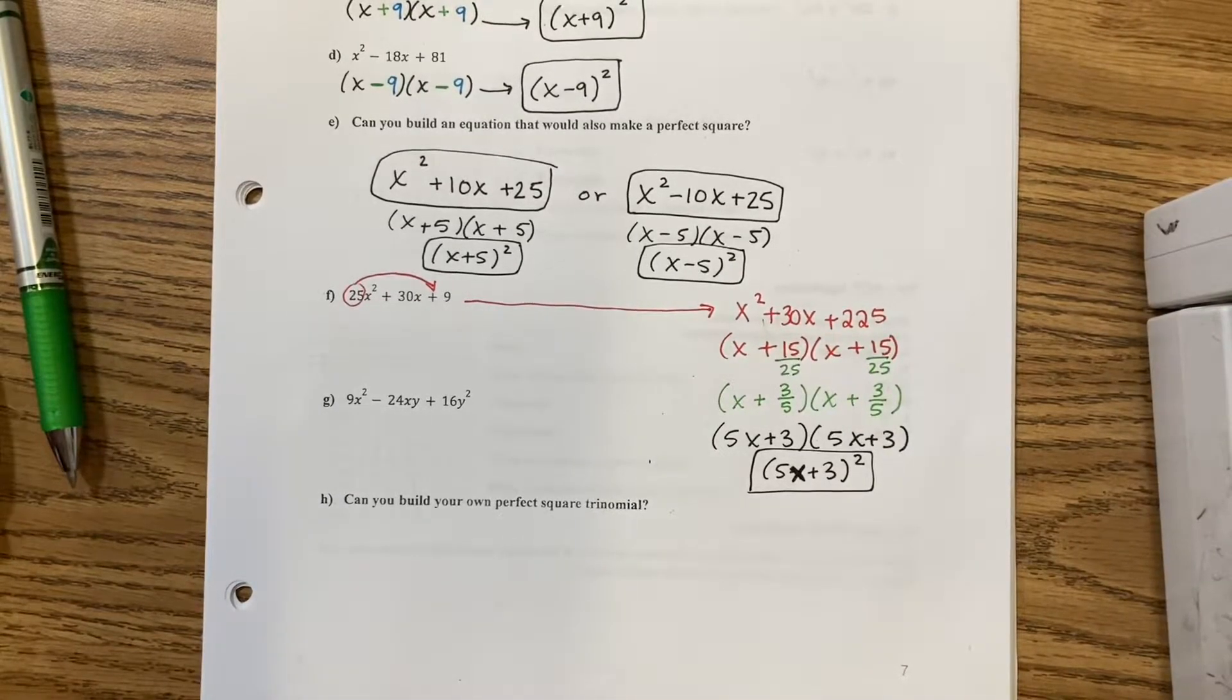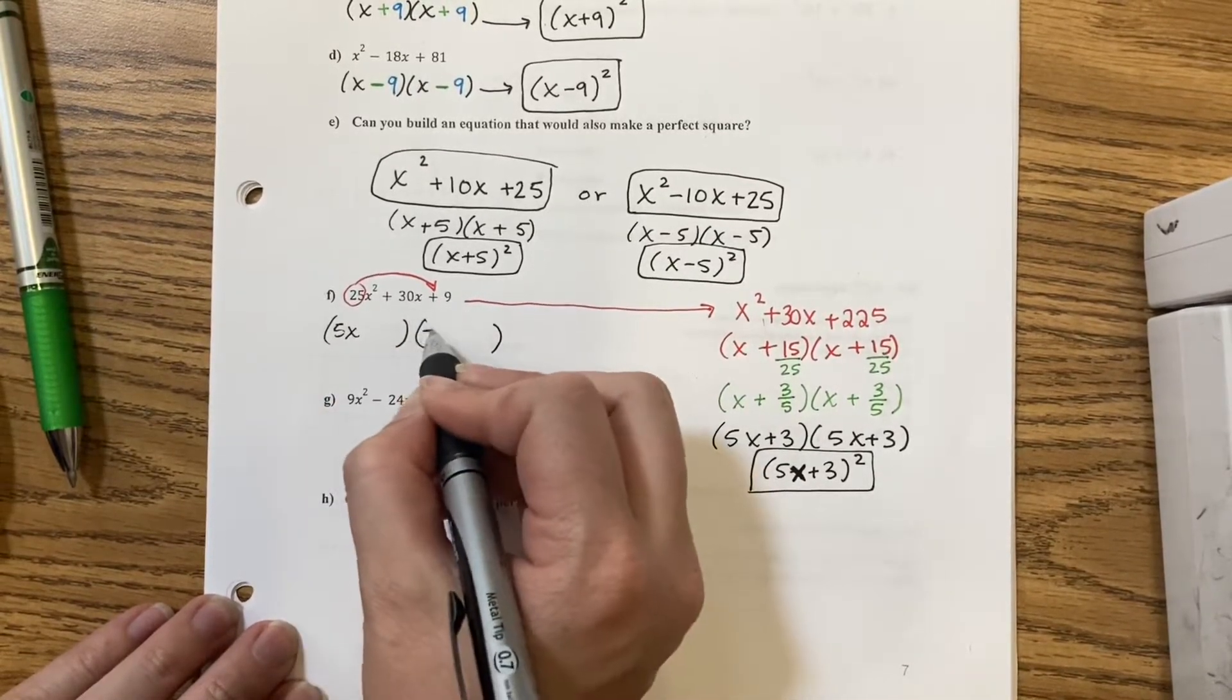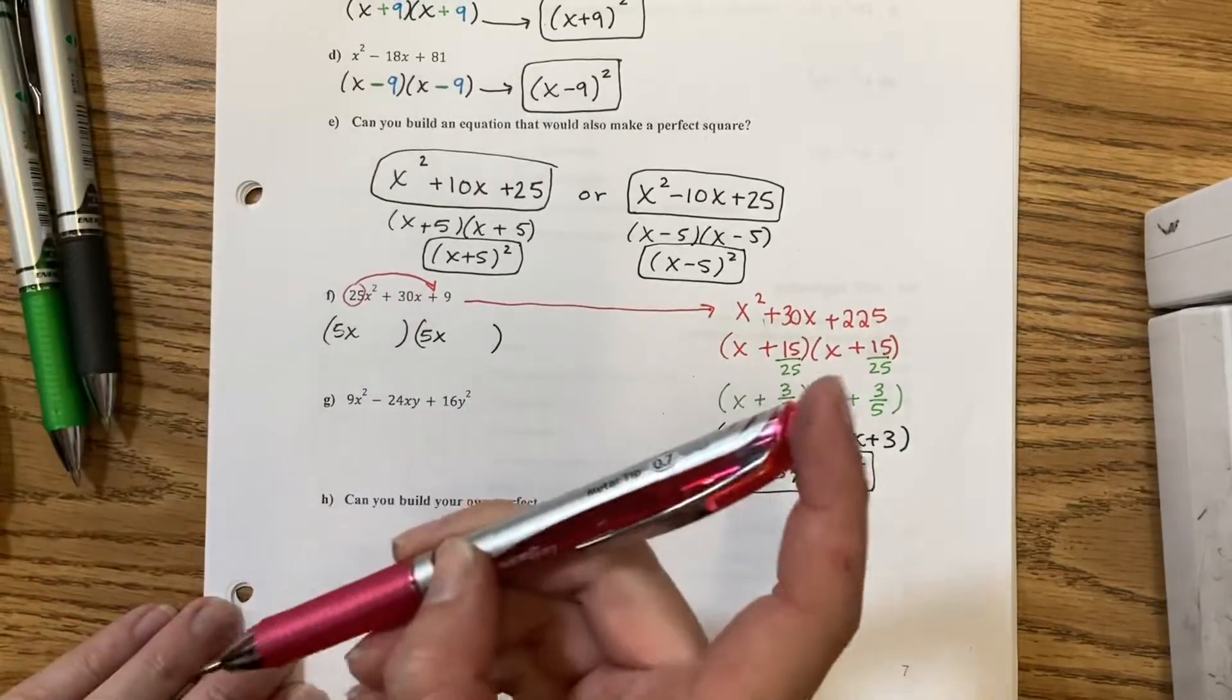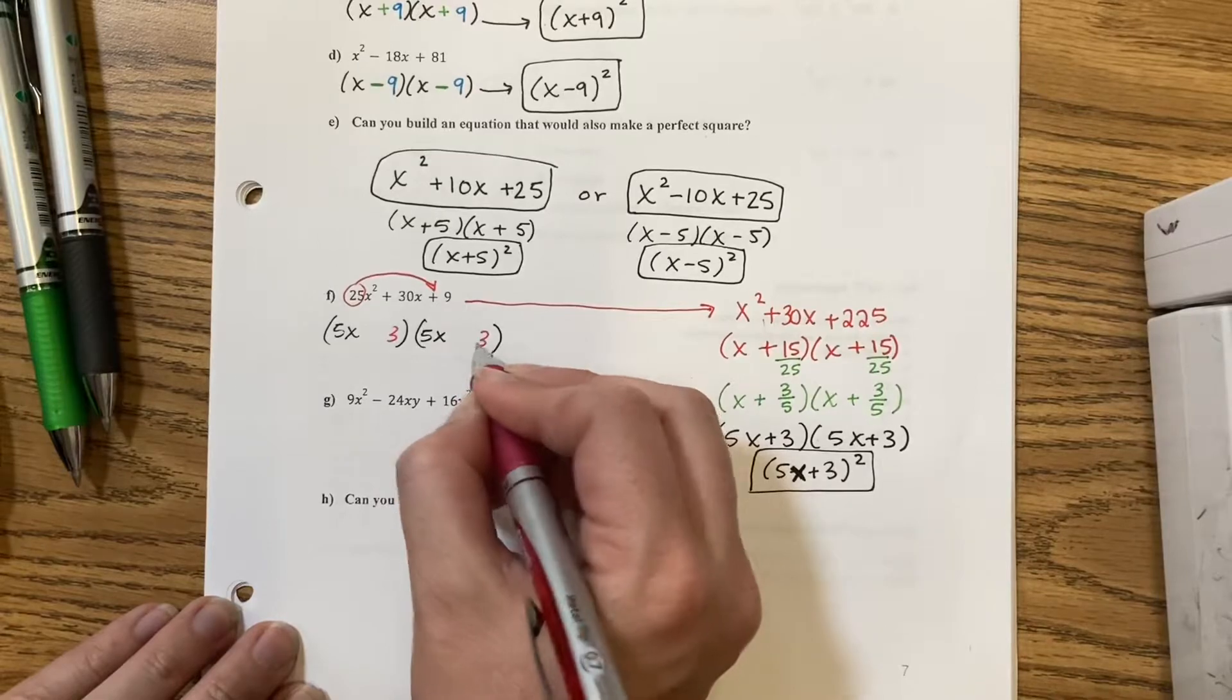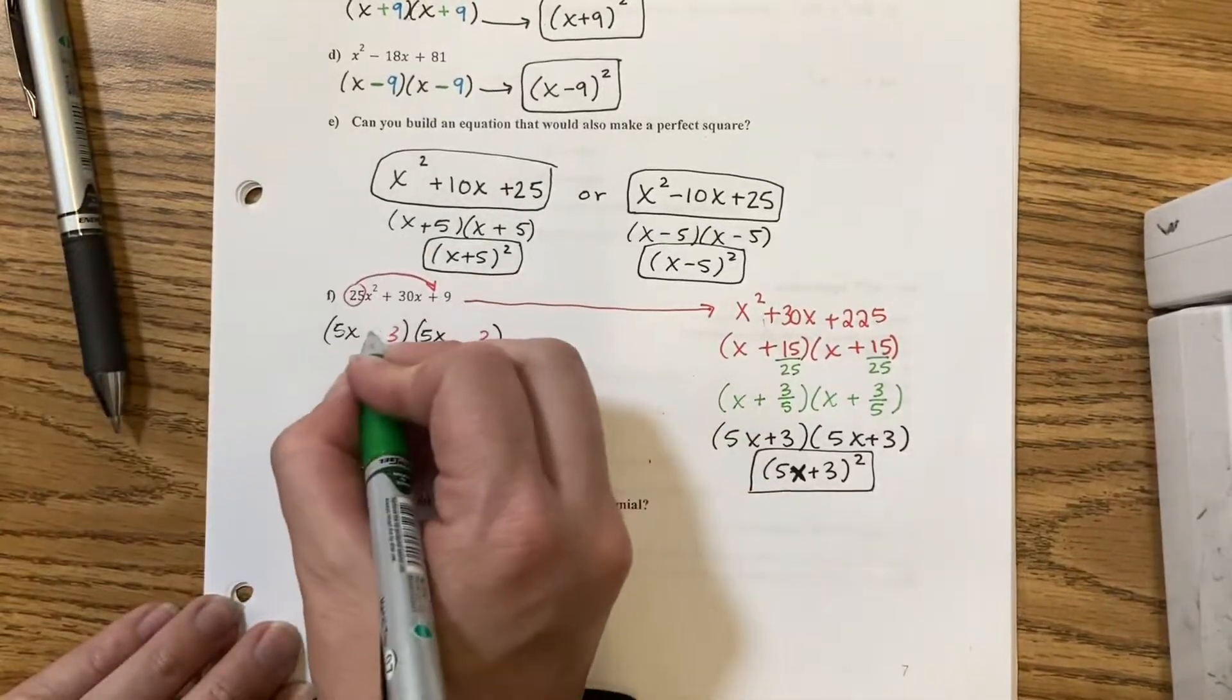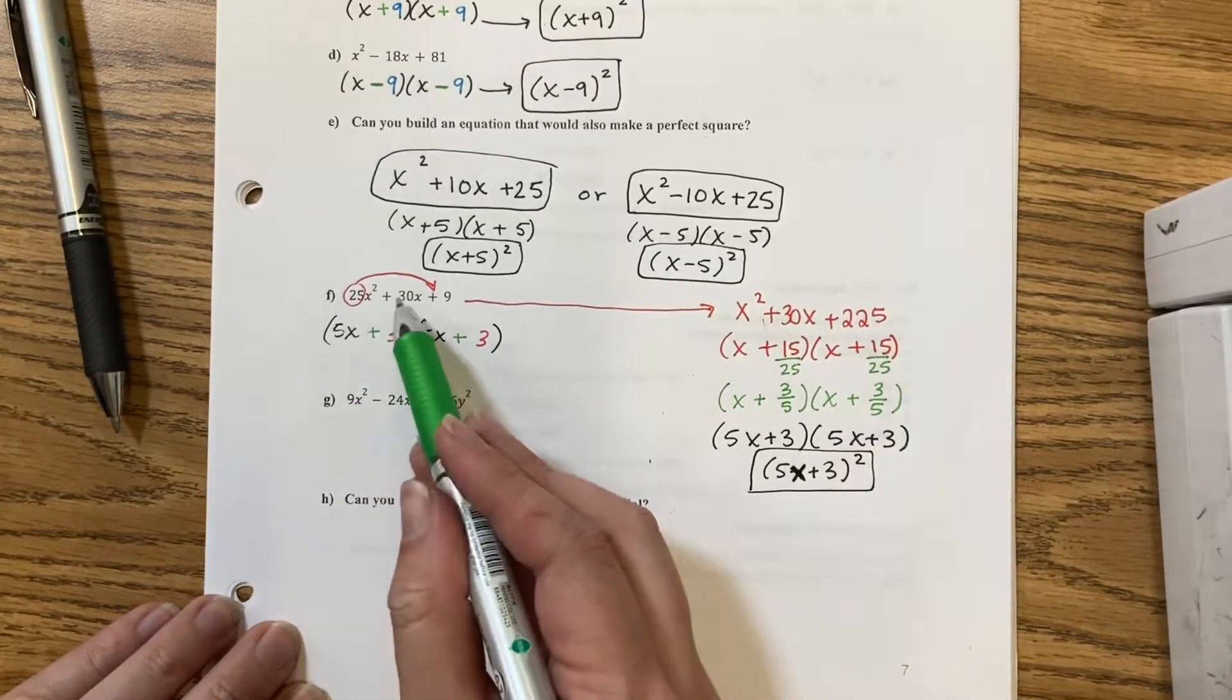Now, the shortcut. 25 is 5 times 5. This only works with special cases. Because 9 is 3 times 3. Now, in the middle, I have a plus 30. That means these need to be plus signs. Because 3 times 5 is 15, plus another 15 would add up to 30.